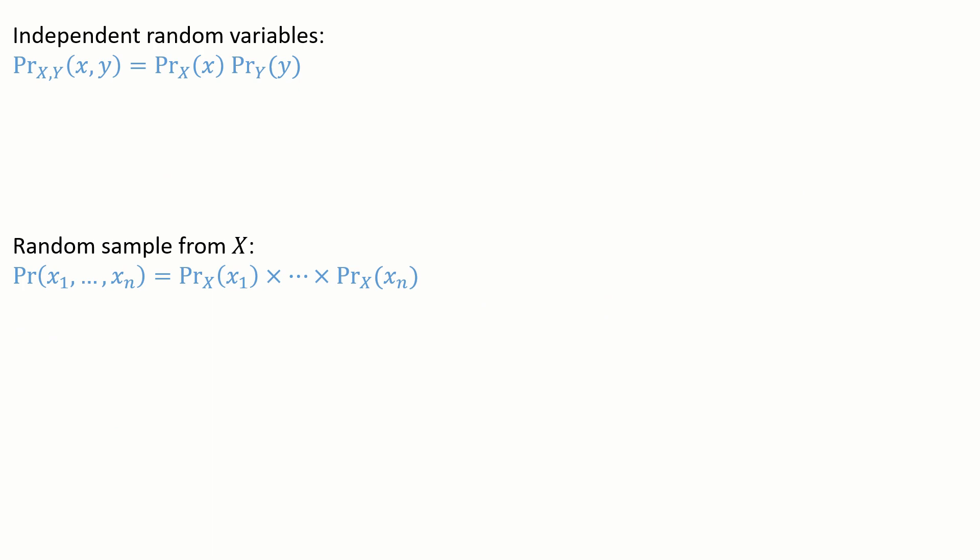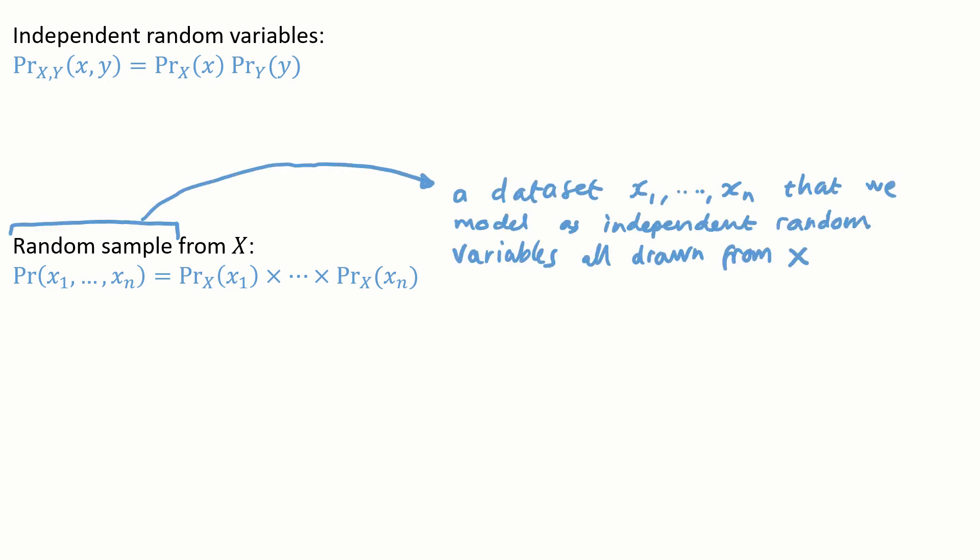If two random variables X and Y are independent, then the likelihood function factorizes. The likelihood of seeing little x comma little y is the likelihood of seeing little x times the likelihood of seeing little y. This applies to collections of more than two random variables, of course, and in particular it applies to what's called a random sample. Often in machine learning, we have a data set that we choose to model as a collection of independent random variables all drawn from the same distribution. Let's call it capital X. Then by independence, the likelihood of the entire data set is just the product of the likelihoods of each of the individual terms.